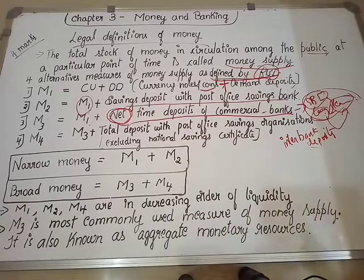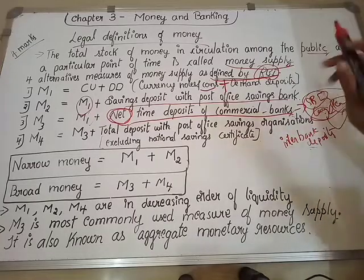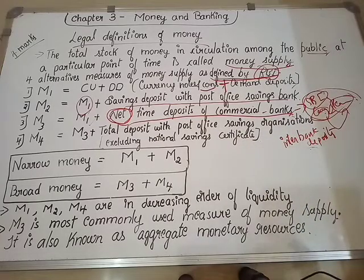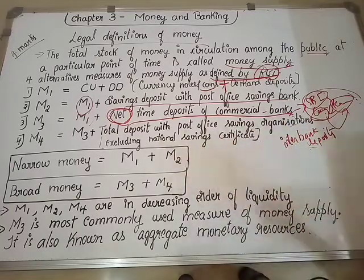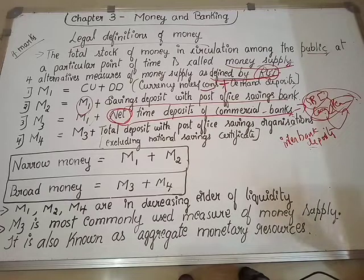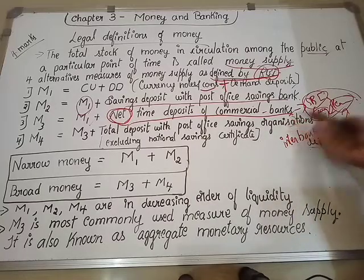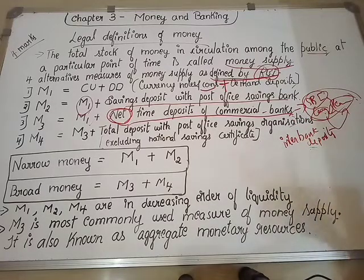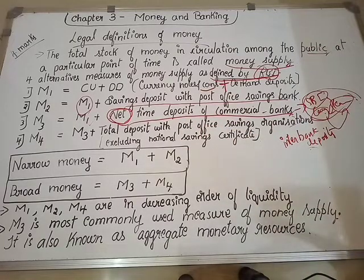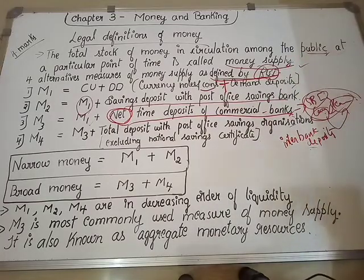The last definition is M4. M4 includes M3 plus total deposits with the post office saving organization, excluding National Savings Certificates (NSC), which are a kind of government certificates. So, M4 = M3 plus total post office saving deposits (excluding NSC). These are the four definitions given by RBI on the basis of money supply.